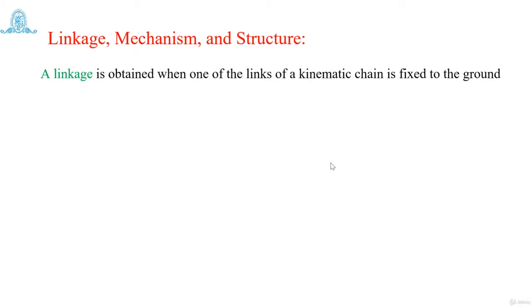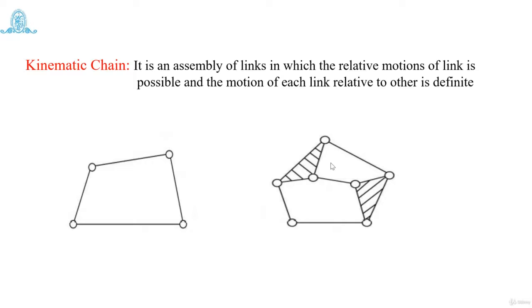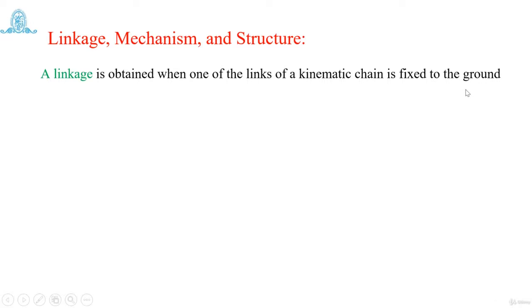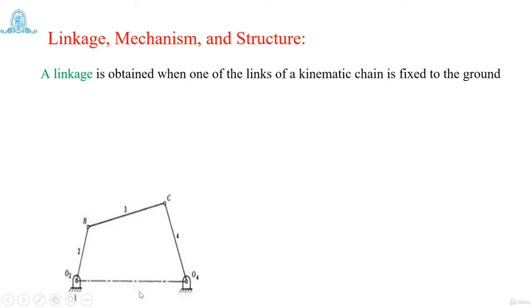Next, we discuss linkage, mechanism, and structure. A linkage is obtained when one of the links of a kinematic chain is fixed to the ground. For example, in the chain O2BCO4, the link O2O4 (link number one) is grounded — shown by the dash-dash-dash grounding symbol. When that kinematic chain has one link fixed to the ground, it turns into a linkage.